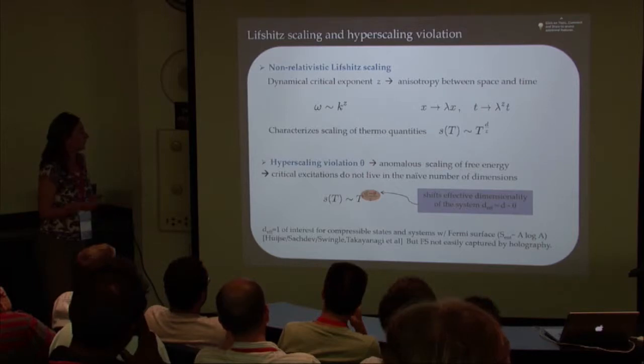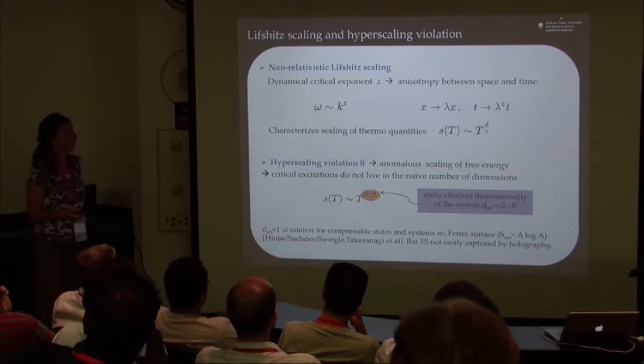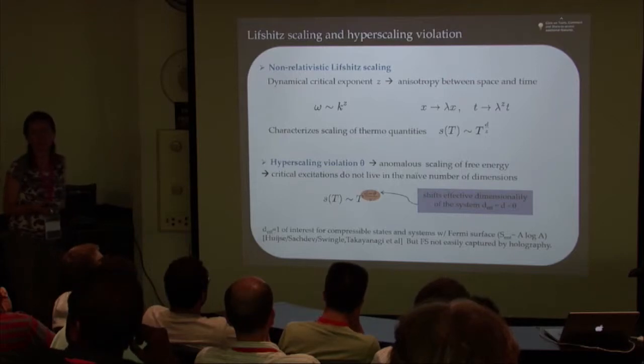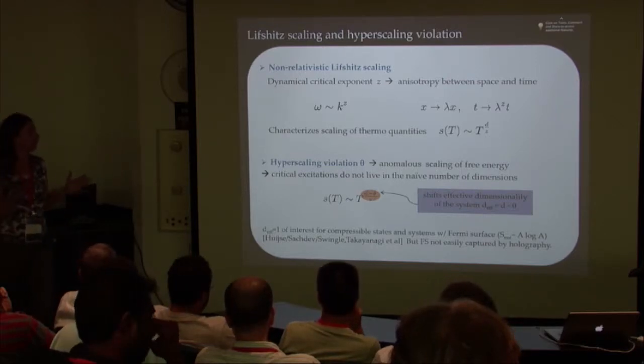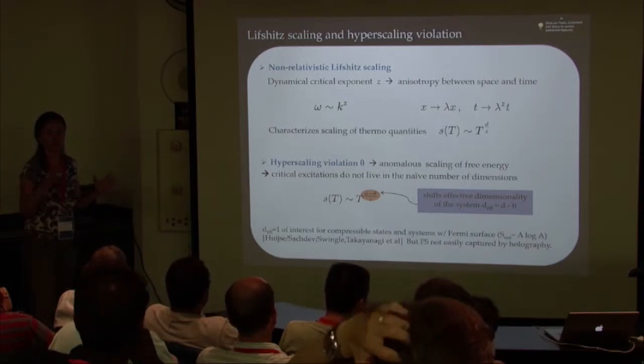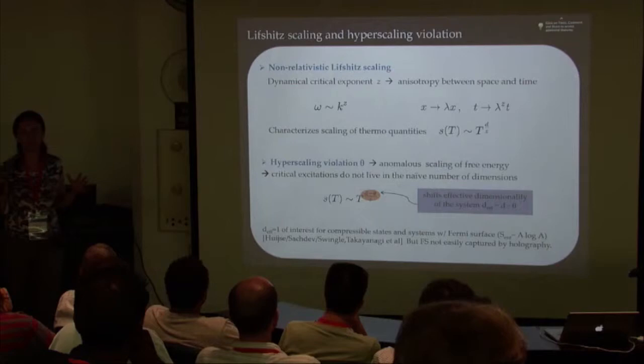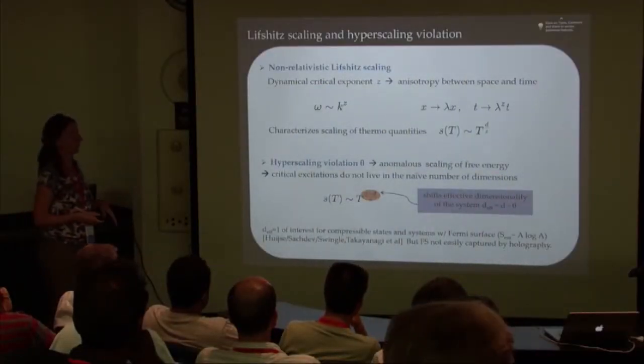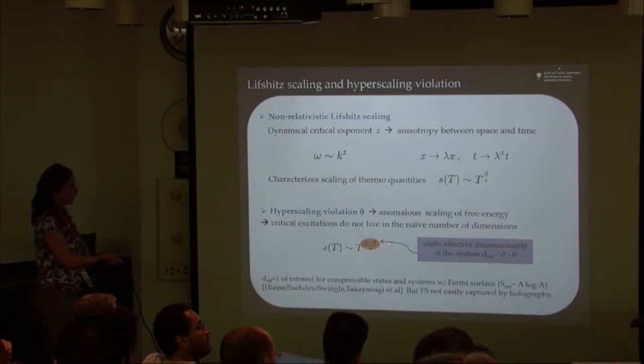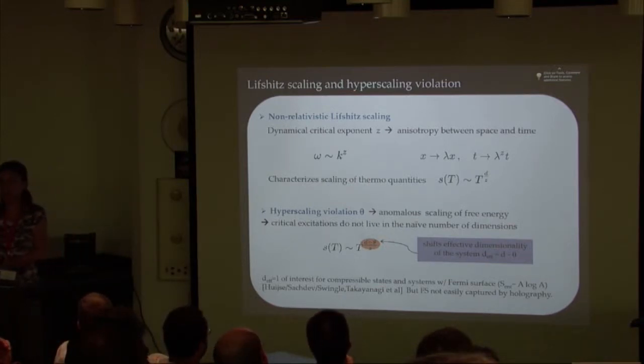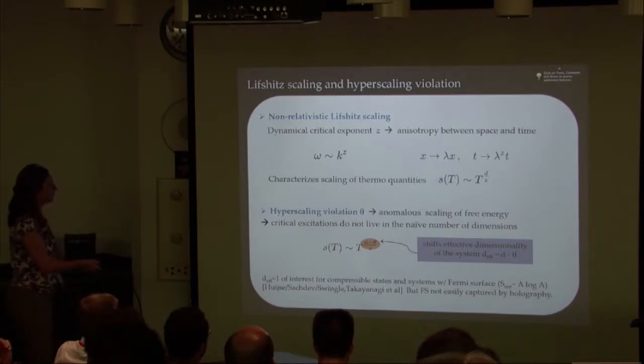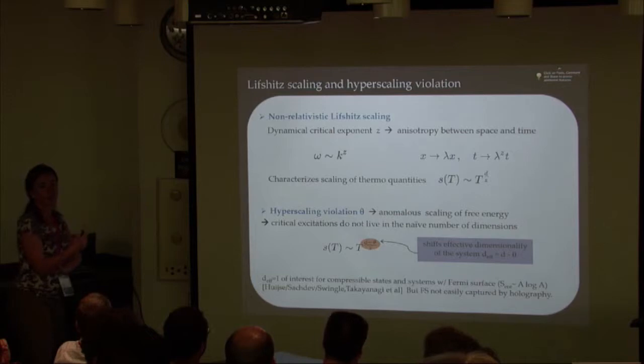It might not be familiar to some of you - hyperscaling violation. This is yet another parameter theta that tells you the free energy is scaling in an anomalous way. One way to understand that is the excitations of the system don't live in the naive number of dimensions. They live in some reduced number of dimensions. The canonical example is a Fermi surface with excitations perpendicular to it. In that case, the dimensionality of the system is 1, even though you may be living in a larger number of dimensions.